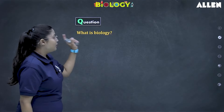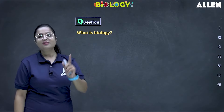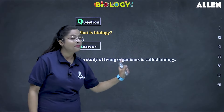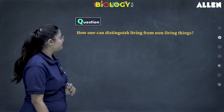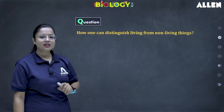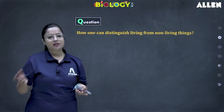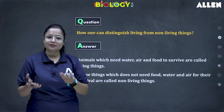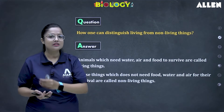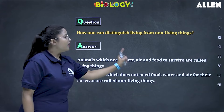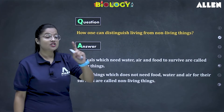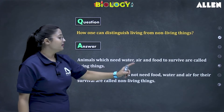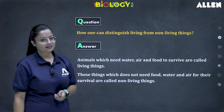Let's discuss some questions. What is biology? The study of living organisms is called biology. How can one distinguish between living and non-living things? Does living need food? Yes. Air? Yes. Water? Yes — it is living. Those that require water, air, and food to survive are living things. Those that don't need food, water, or air — you will call them non-living things.